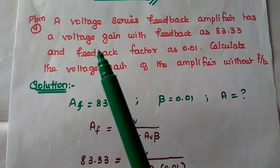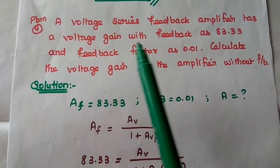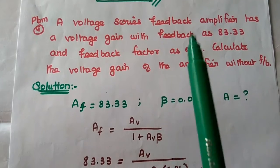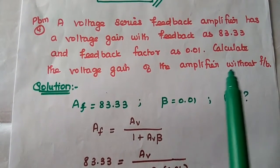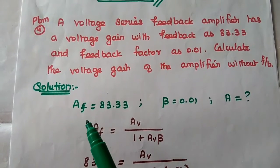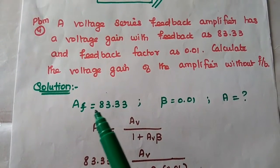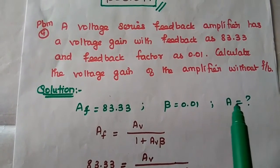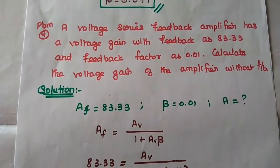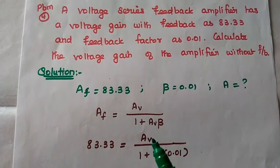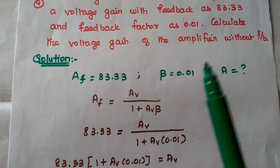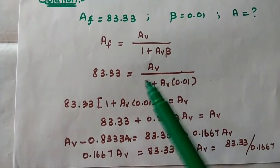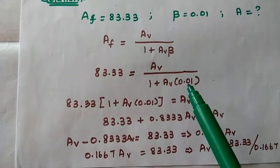The next problem: a voltage series feedback amplifier has a gain with feedback AF = 83.33 and feedback factor β = 0.01. Calculate the voltage gain without feedback. Using AF = A / (1 + A·β): 83.33 = A / (1 + A × 0.01).